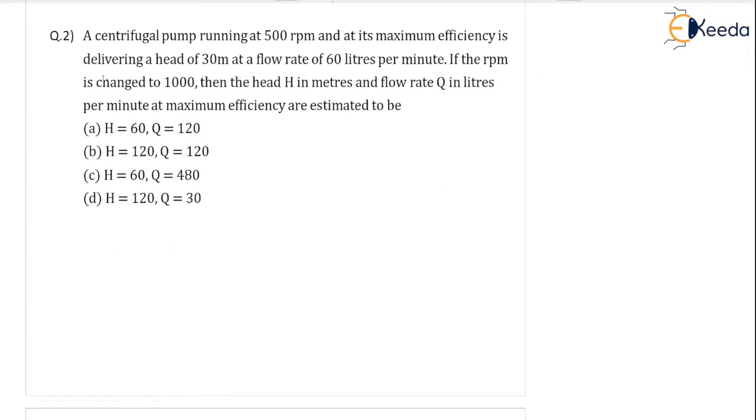As per the given question, a centrifugal pump running at 500 rpm and at its maximum efficiency is delivering a head of 30 meter at a flow rate of 60 liters per minute. If the rpm is changed to 1000, then the head h in meters and the flow rate q in liters per minute at maximum efficiency are estimated to be.